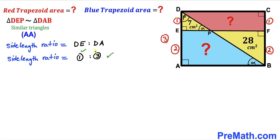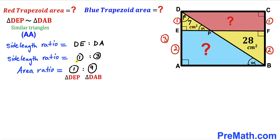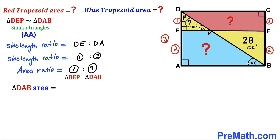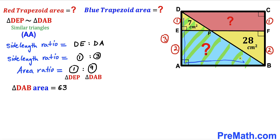Since the side length ratio is 1 to 3, their area ratio is 1² to 3², which is 1 to 9. So if the area of triangle DEP is 1, the area of triangle DAB is 9. Since the area of triangle DEP is 7 and the ratio is 1 to 9, the area of triangle DAB is 7 × 9 = 63 cm².